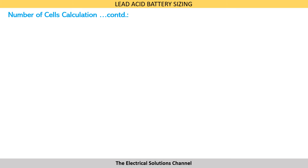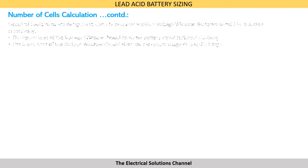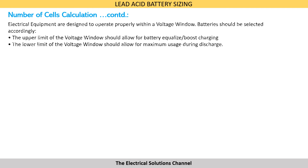However, this method doesn't allow for effective utilization of the battery capacity. Accordingly, a more accurate method utilizing the voltage window is followed for calculating the number of cells of a battery bank. Let us now understand this method.